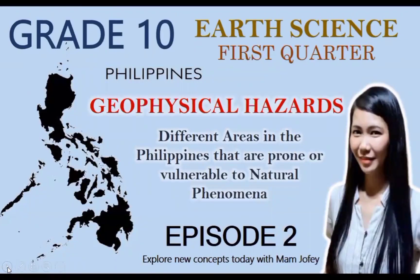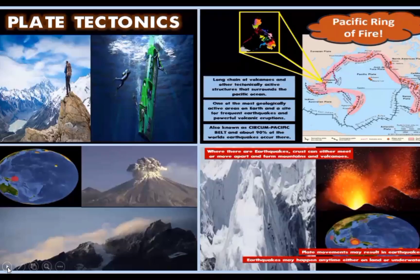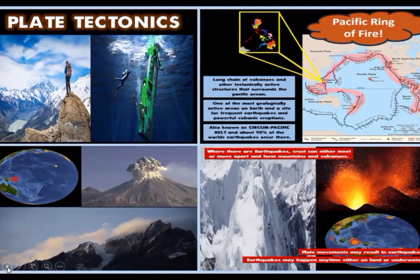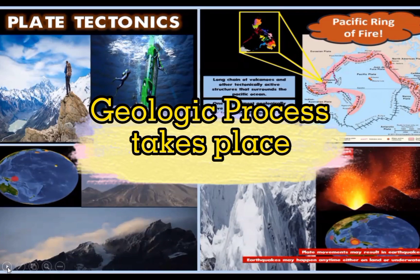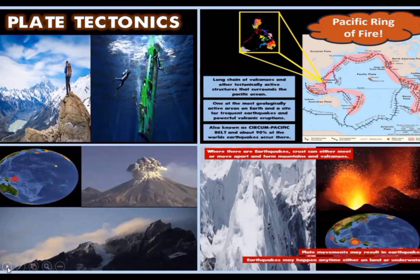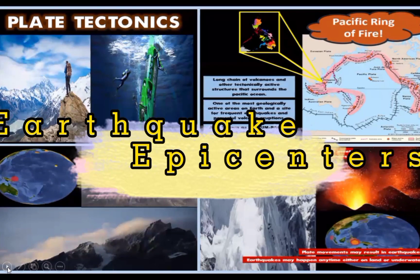Last episode, you were able to learn about plate tectonics based on the distribution of active volcanoes, earthquake epicenters, and mountain ranges. Specifically, you learned that plates are in constant motion, and as they interact along their margins, important geologic processes take place such as the formation of mountain ranges, active volcanoes, and earthquake epicenters.